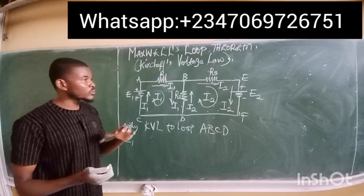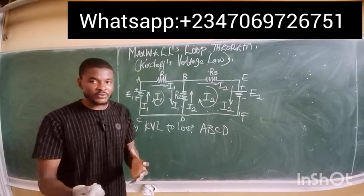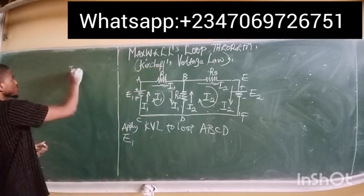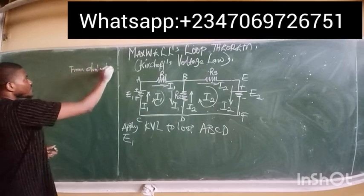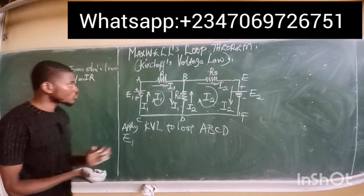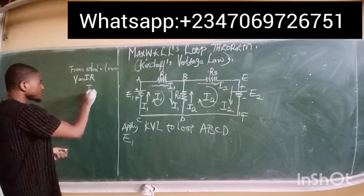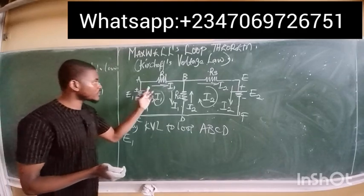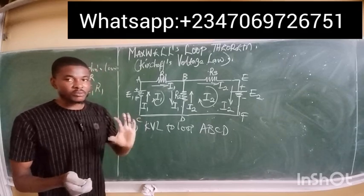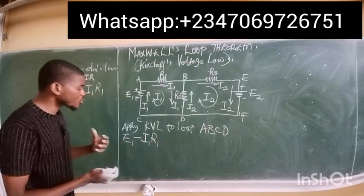Whenever a current flows through a resistor it gives us a potential drop, because the essence of a resistor is to reduce the intensity of current flowing through the circuit. So we have current i1 flowing through resistor r1. From Ohm's law, the potential difference V equals the product of current and resistance, so the drop is −i1·r1. The negative sign shows a potential drop.